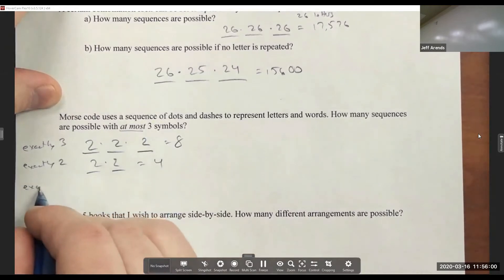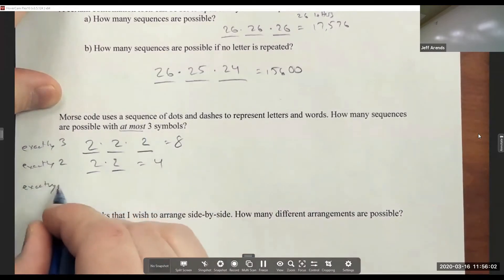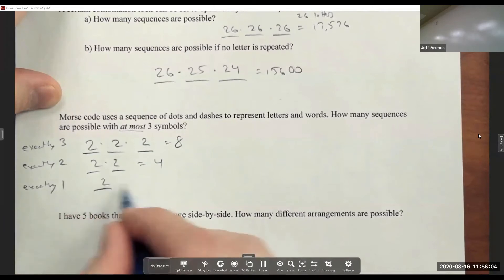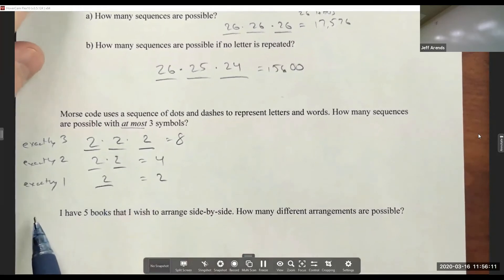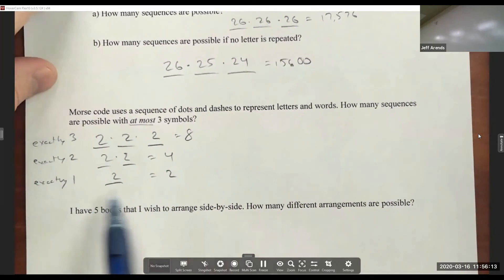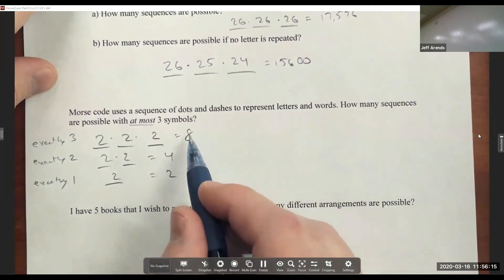Of course, I could have exactly one symbol, which is two different ways. And I don't think you could really count having exactly zero symbols. It's not really representing anything if you didn't do anything.